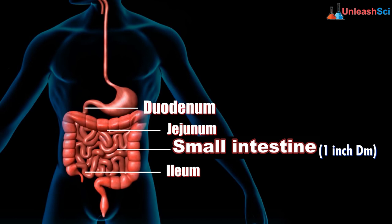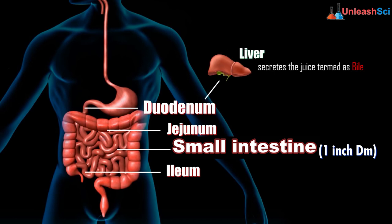In the duodenum, it receives digestive juices from accessory glands such as the liver. The liver secretes a juice termed as bile. The bile juice helps in the emulsification of fat — meaning the breakdown of fat into fatty acids and glycerol. The liver secretes bile, but it is stored in the gallbladder.